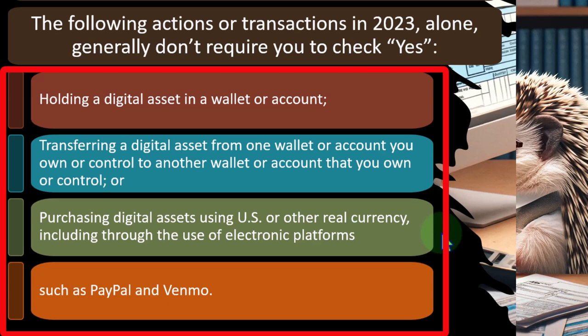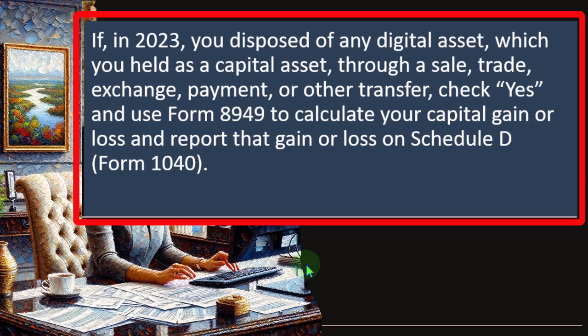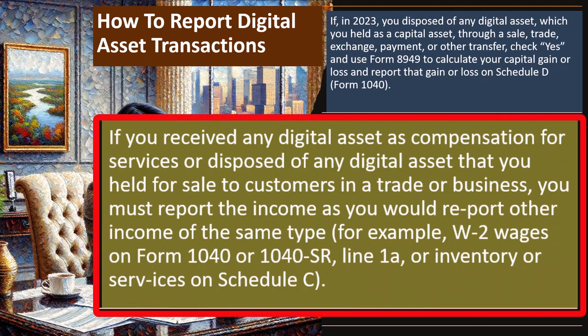How to record digital asset transactions: if in 2023 you disposed of any digital asset held as a capital asset through a sale, trade, exchange, payment, or other transfer, check 'yes' and use Form 8949 to calculate your capital gain or loss, then report that gain or loss on Schedule D. This is similar to a stock transaction — if it went up in value you'd have a gain; if it went down, possibly a loss, which could be beneficial for tax purposes.